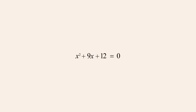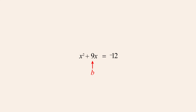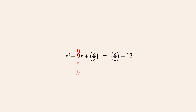In this quadratic expression, the x-coefficient b is 9 and the constant term c is 12. Just as before, we move the constant term c to the right side by subtracting it from both sides, and then add b over 2-squared to both sides. The quadratic expression on the left is now a perfect square that can be written as x plus b over 2 quantity squared.